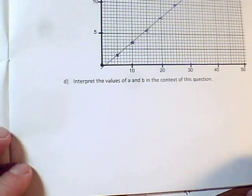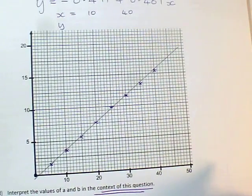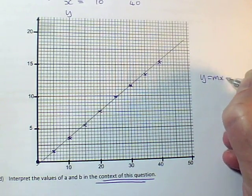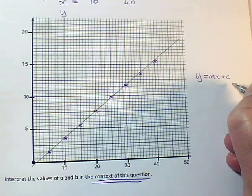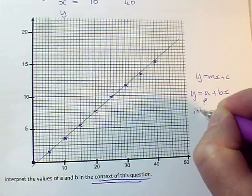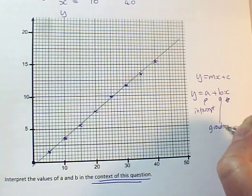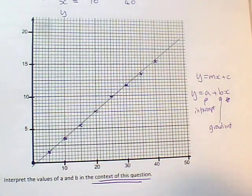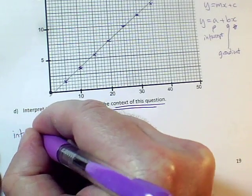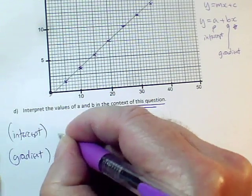So we know from our theory of straight lines, Y equals MX plus C. And the Y intercept and B is telling us the gradient. But you will get no marks for interpretation in context if you talk about gradient and the intercept, or if that's all you talk about. So I'm going to put intercept and I'm going to put gradient, but I'm going to put them in brackets because they're not what's going to get me the marks.